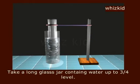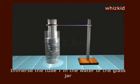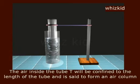Experiment: Take a long glass jar containing water up to three-fourths level. Take another glass tube T with both ends open and fix it to a retort stand. Immerse the tube T in the water of the glass jar. The air inside the tube T will be confined to the length of the tube and is set to form an air column.